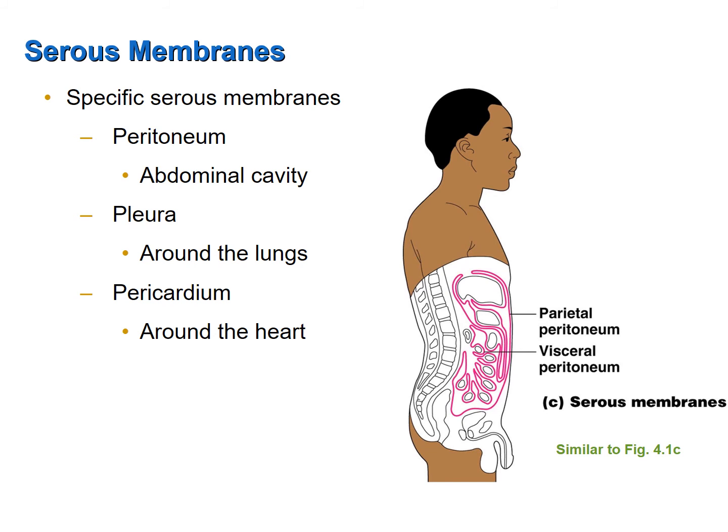Serous membranes have very specific names depending on what organ they surround. The peritoneum or peritoneal membranes surround the organs of the abdominopelvic cavity. The pleural membranes surround the lungs. The pericardial membranes or pericardium surround the heart. I'm not holding you responsible for knowing these terms at this time — I simply want to introduce them so that when we cover the respective organ systems and you hear these names again, you'll remember that these are serous membranes we discussed earlier in the semester.